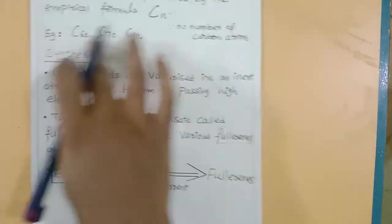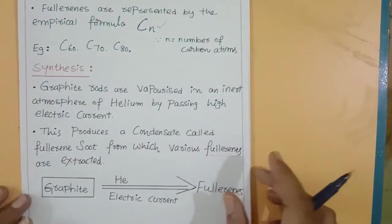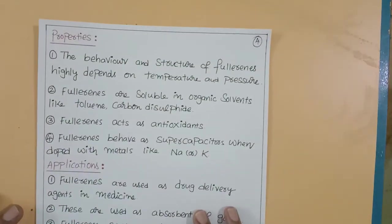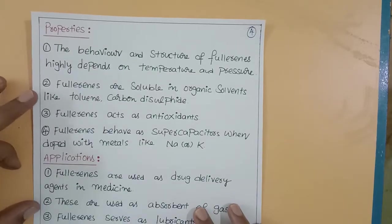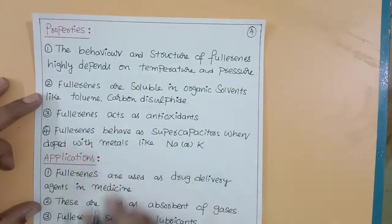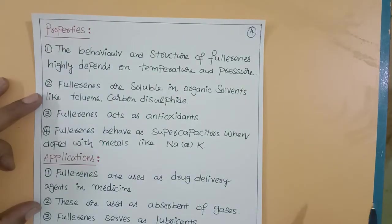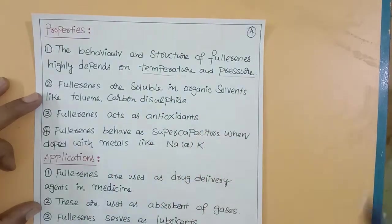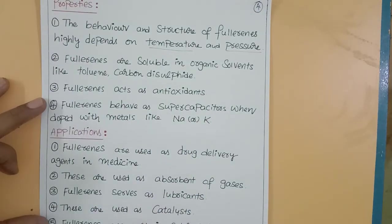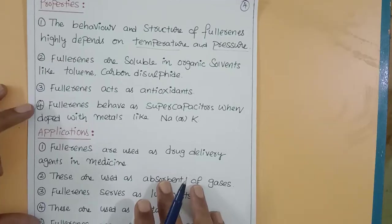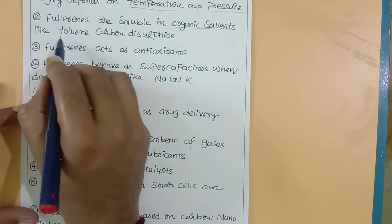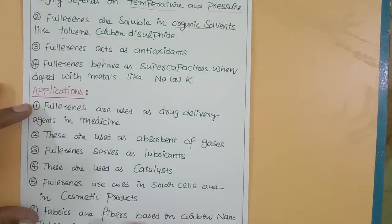Now properties and applications. What are the physical and chemical properties of fullerenes? Fullerene behavior and structure depends on temperature and pressure. Fullerenes do not dissolve in water, but fullerenes are soluble in organic solvents like toluene and carbon disulfide.